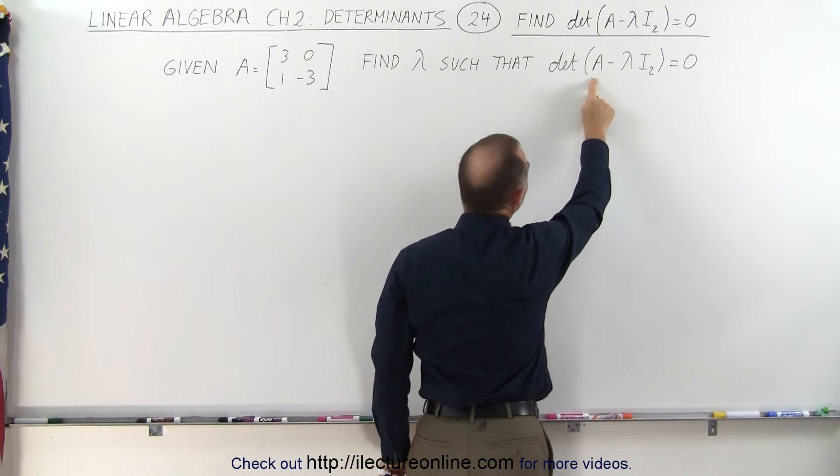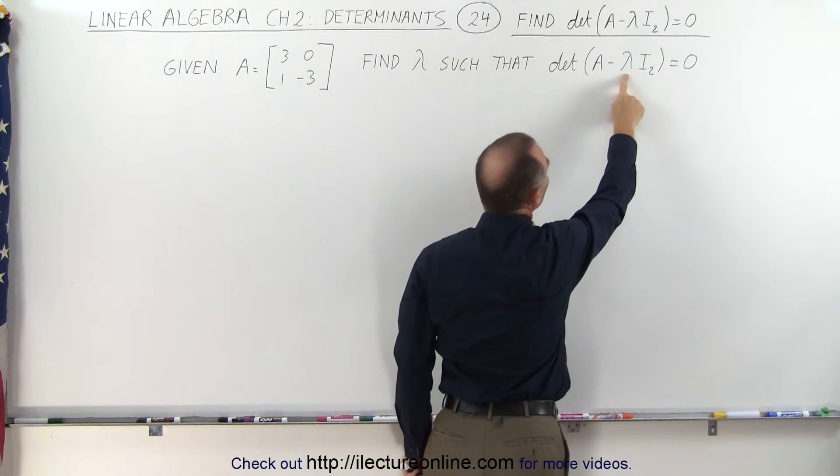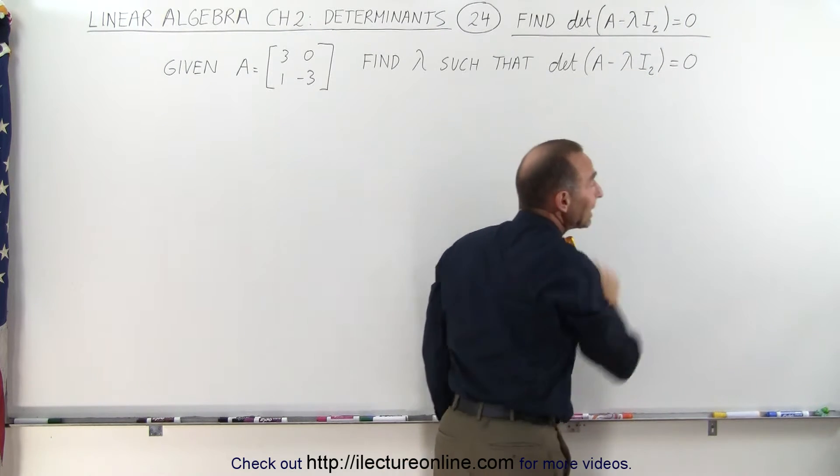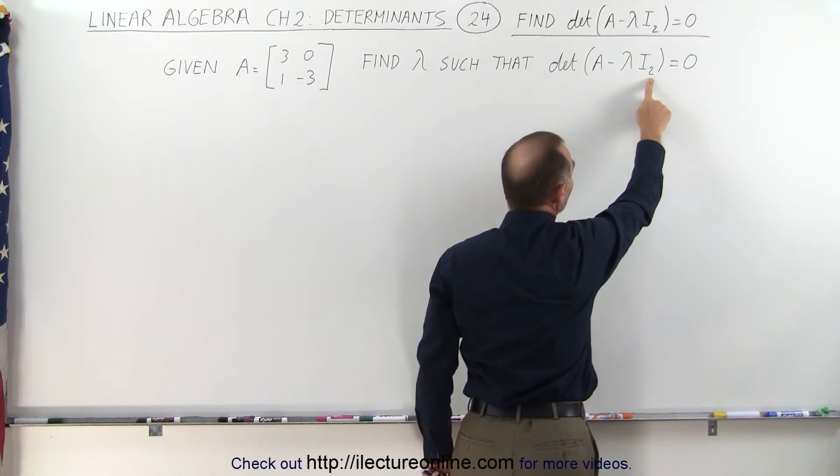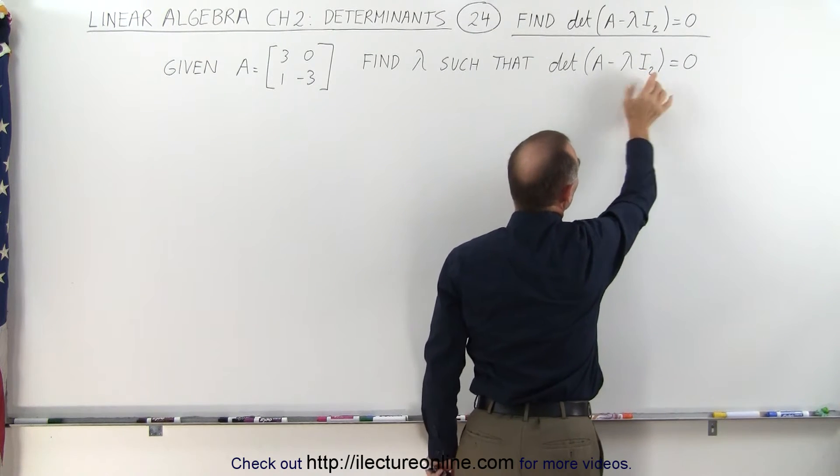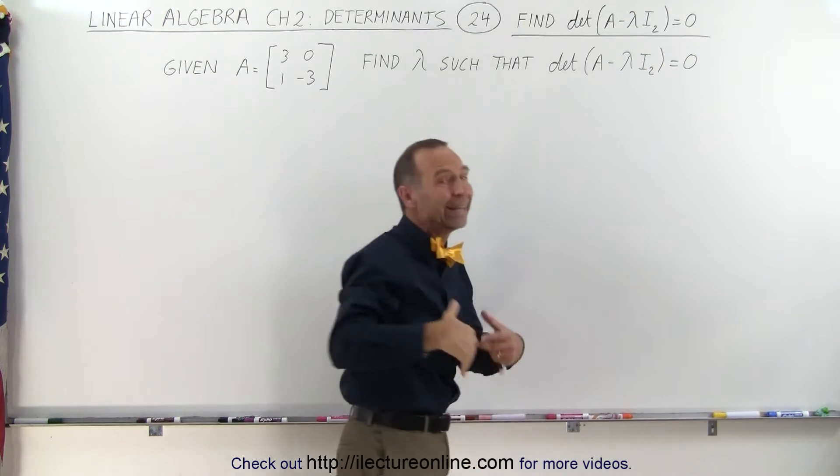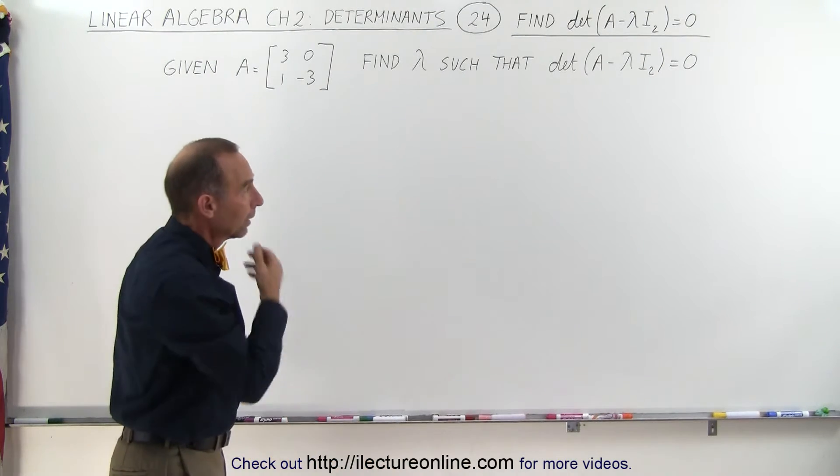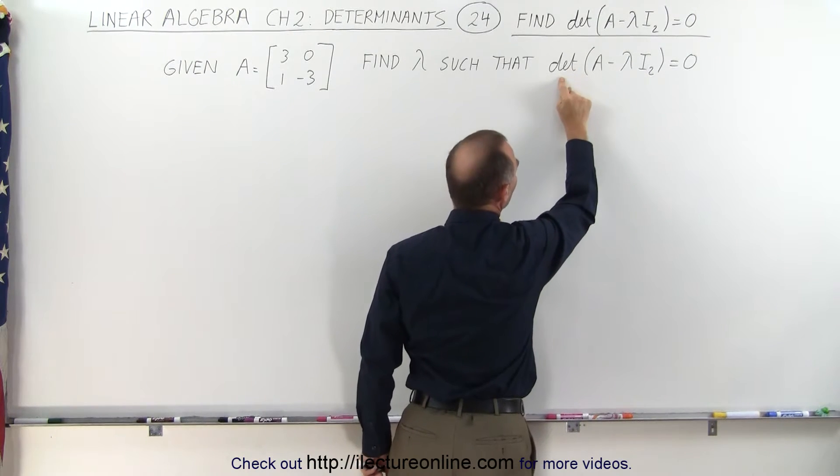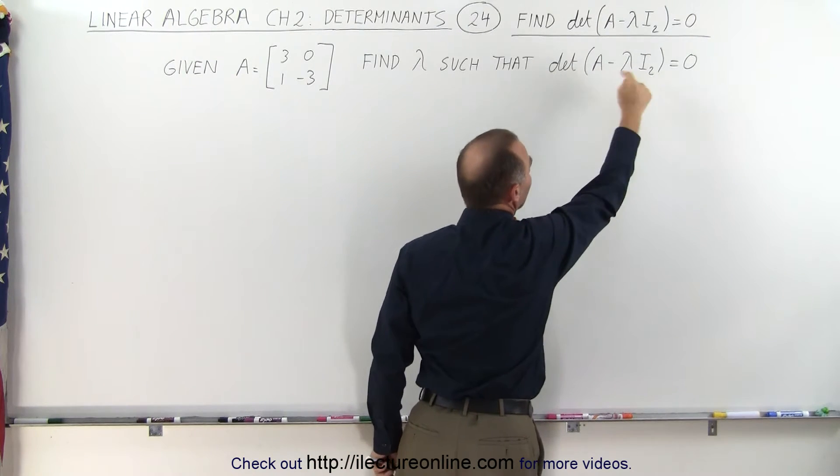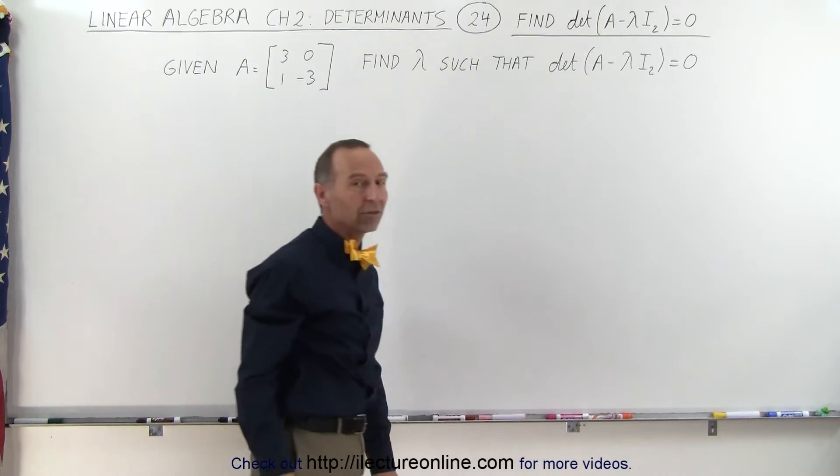We want to find what the value of this constant is in such a way that if we take the determinant of A minus that constant times the identity matrix, the two by two identity matrix because that's what the little two means, and when you take the determinant you then set it equal to zero. So let's go ahead and work this portion out first and then we'll take the determinant of that and set it equal to zero and then solve for the constant lambda.